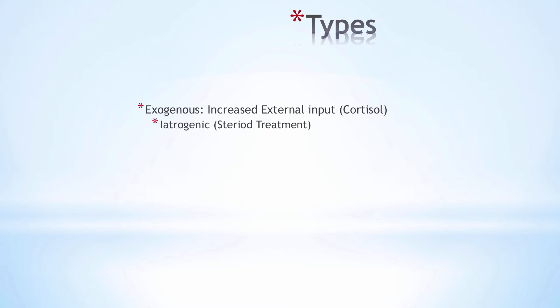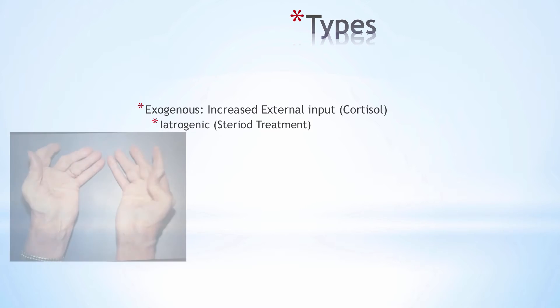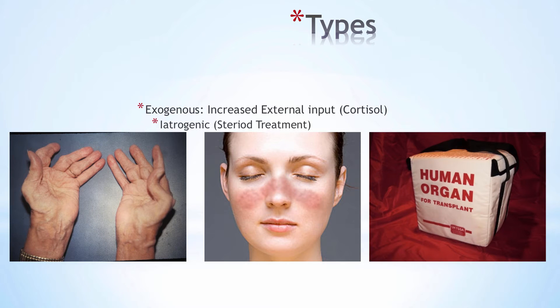The majority of Cushing's cases are iatrogenic — patients receiving immunosuppressive treatment over a long period of time. Think of autoimmune disorders like rheumatoid arthritis, SLE, or transplant patients on high doses of steroids to avoid organ rejection. These patients may become more sensitive to the dosage over time, or it may simply be an overly aggressive treatment plan, and tapering down the dosage usually resolves the condition.